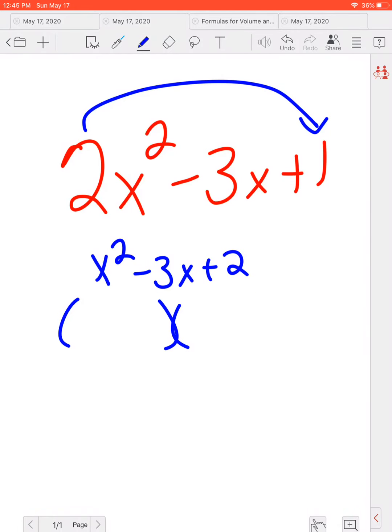And then we go about our merry way just like what we did before. We say X times X multiplies to be X squared. We want something that multiplies to be 2 but adds or subtracts to be 3.